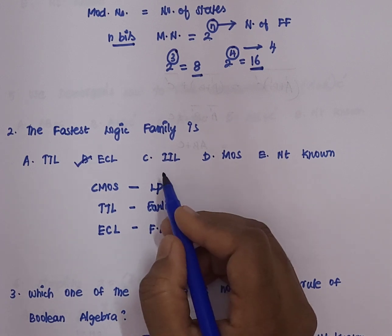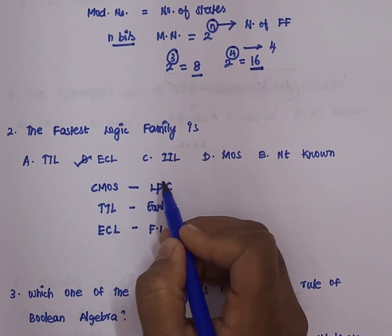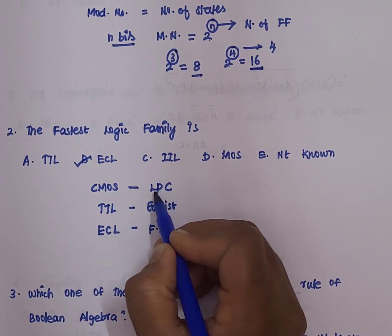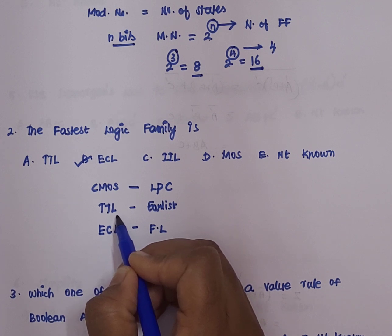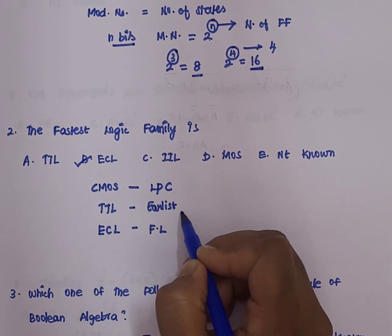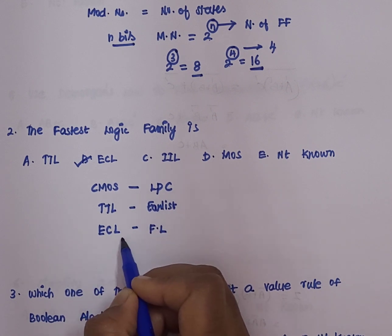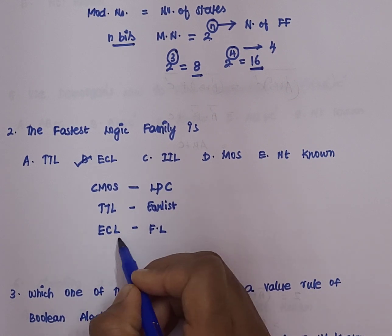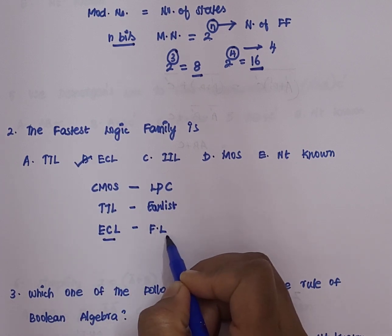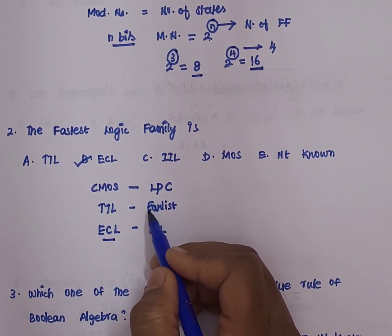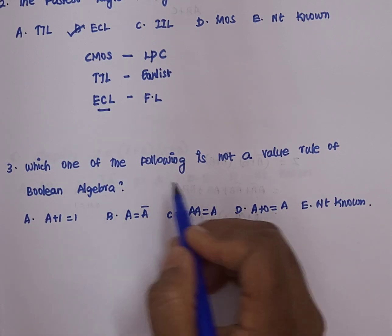In summary for logic families: CMOS has low power consumption as its key characteristic. TTL was the first developed logic family. ECL, emitter-coupled logic, is logically the fastest. So from the given options, option B is the correct answer.